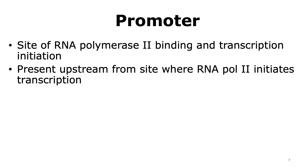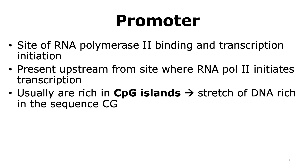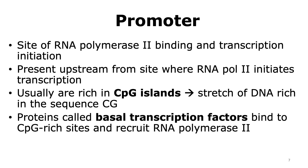The promoter is the site where RNA polymerase 2 — the enzyme responsible for transcription of all messenger RNA in eukaryotes — binds to the gene, and this is where transcription initiation occurs. Promoters are normally present upstream from the site where RNA Pol2 initiates transcription. Promoters are usually rich in what we call CpG islands, which are stretches of DNA rich in the sequence C followed by G. Basal transcription factors are able to bind to CpG-rich sites in the promoter and can recruit RNA polymerase 2 to start transcription.